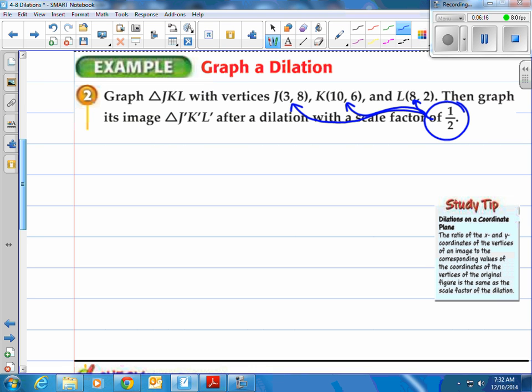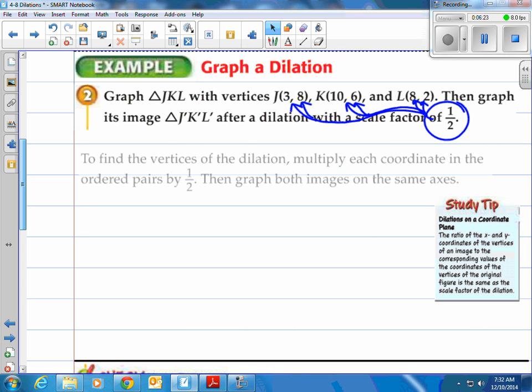When I say each one, I mean each one inside. Both numbers, you're going to multiply by 1 half. Yes, you can use your calculator if you like. So, what's our first step? Again, we're going to take the coordinates and multiply by 1 half. Then we're going to graph both images on the same axis, which you'll see here.